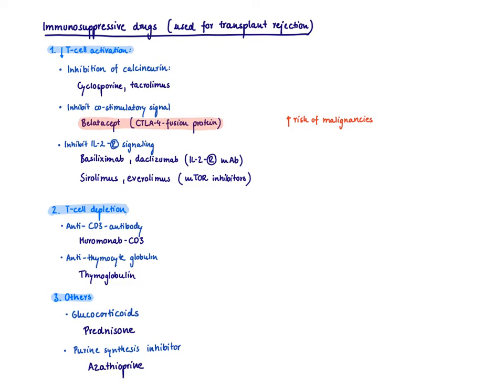If you inhibit signal 2 with belatacept, this is a pretty new drug. There's not too much data. Definitely watch out for an increased risk of malignancies. There's a black box warning for post-transplant lymphoproliferative disorders, so increased risk for developing lymphomas.